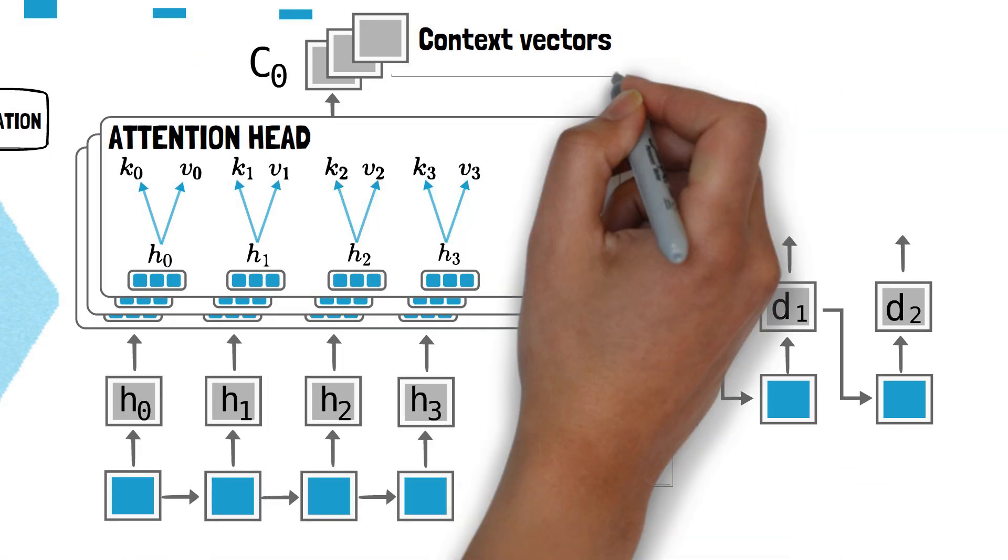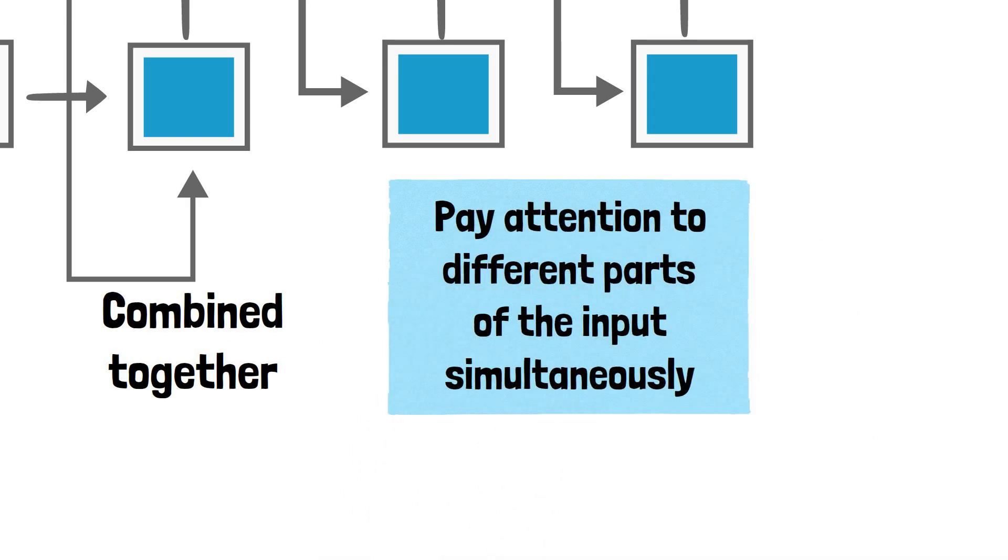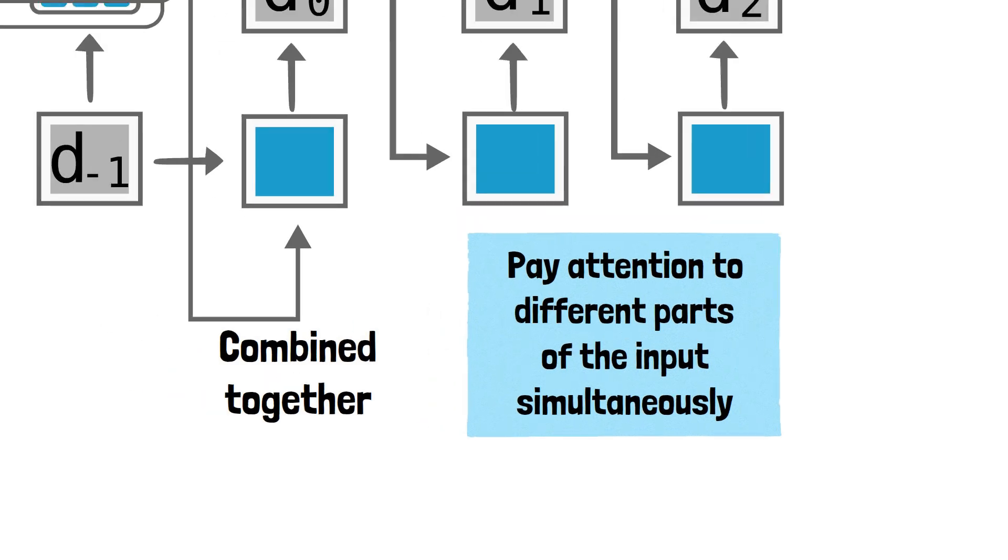Finally, in the decoder, all of these context vectors from the different heads are combined together. This allows the model to learn to pay attention to different aspects of the input of the output simultaneously, making the translation process more effective.